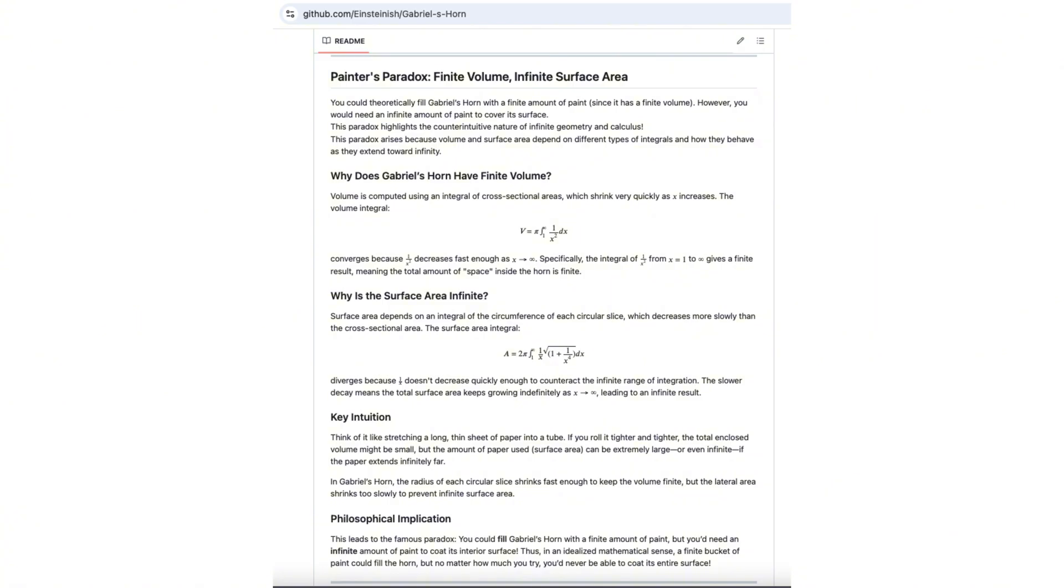The key to understanding lies in how differently volume and surface area behave in infinite objects. As the horn extends further, its cross sections become smaller and smaller, shrinking quickly enough to keep the total volume finite.